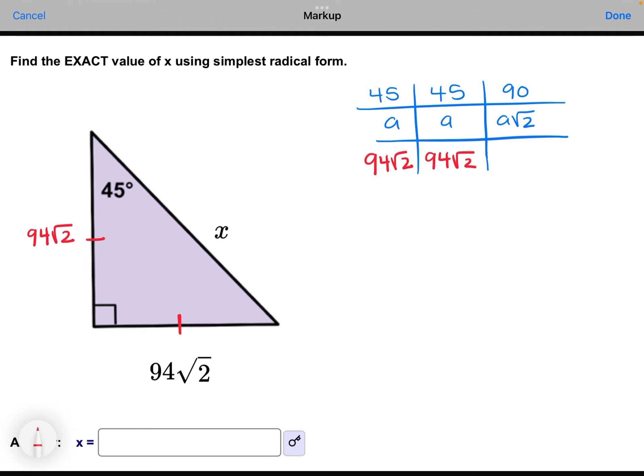So if we're trying to solve for the side of the hypotenuse, across the 90-degree angle, we're going to take A, which is 94 square roots of 2, and we're multiplying times another square root of 2.